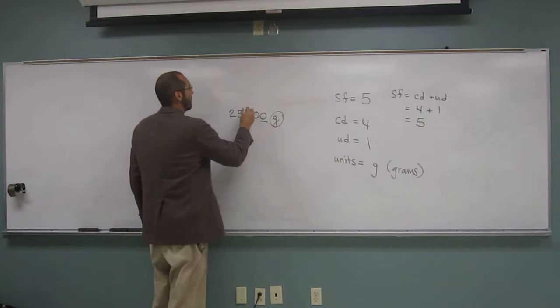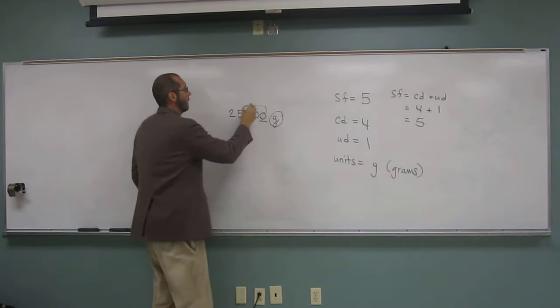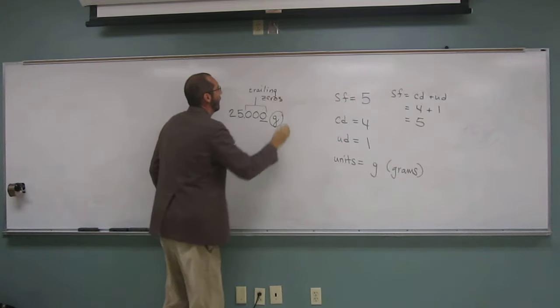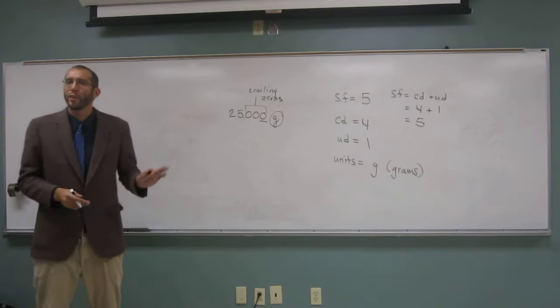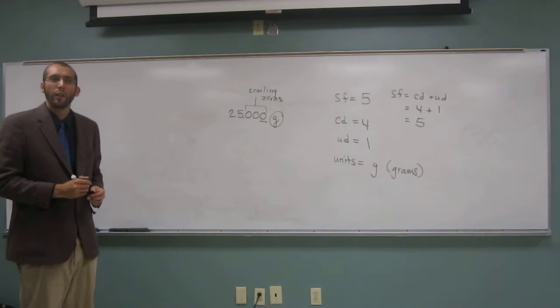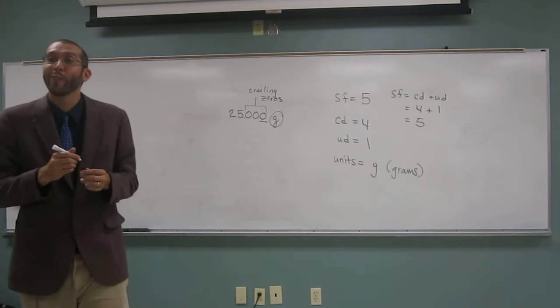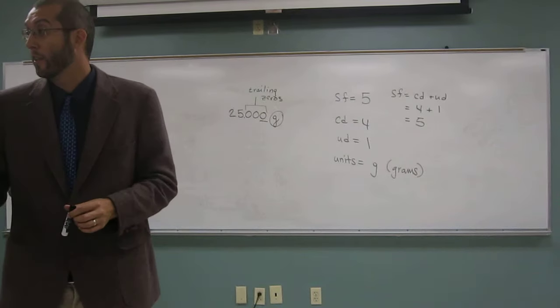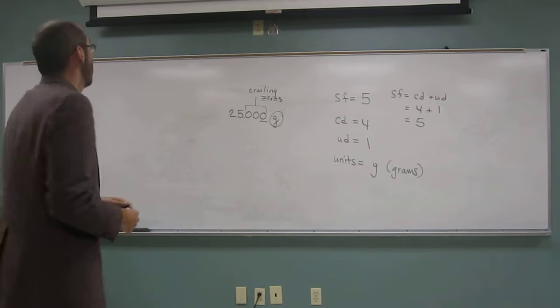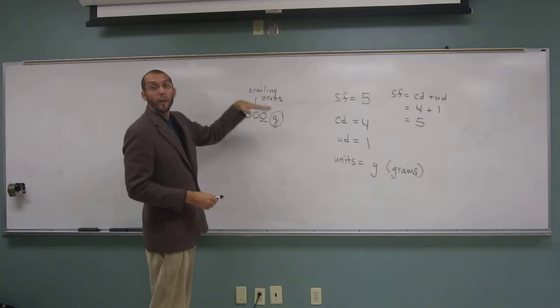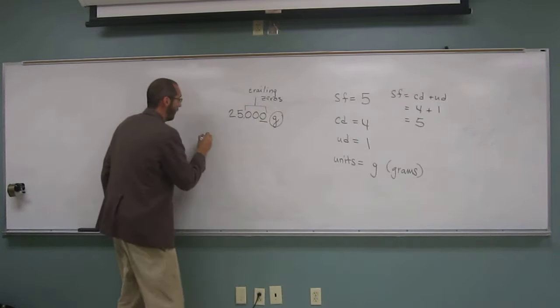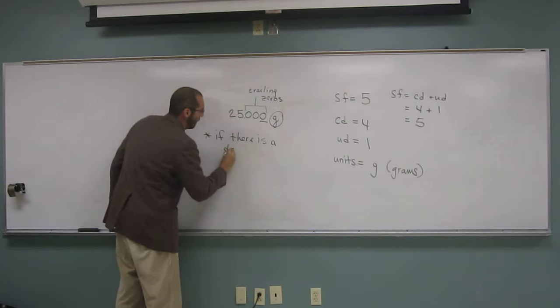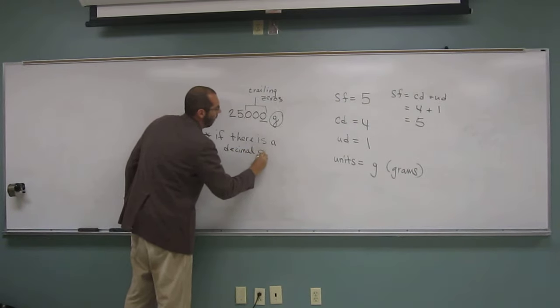So what kind of zeros do we have here? Trailing zeros. Trailing zeros. Okay, so these ones were significant. Can I say that trailing zeros are always significant? No. No, no, no, I can't, right? Why can I not? How come these ones are significant? There's a decimal. There's a decimal in the number, okay? So if there's a decimal in the number, then the trailing zeros are significant. So I'll write that down. So a decimal point, I guess.